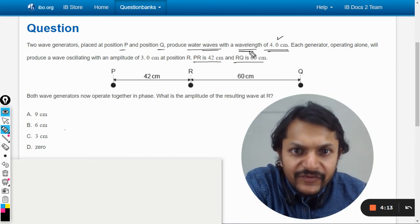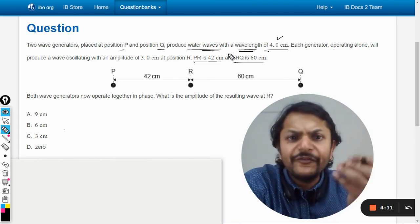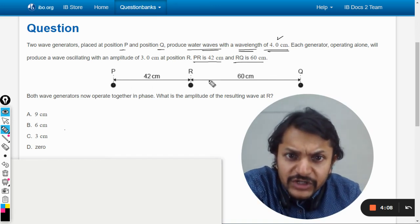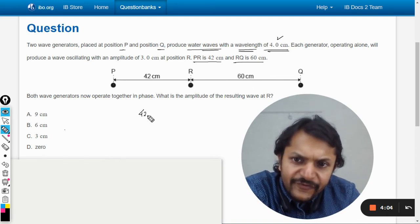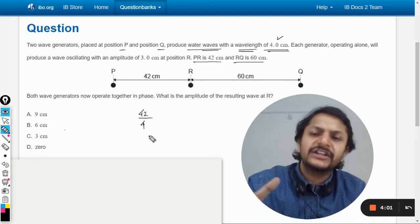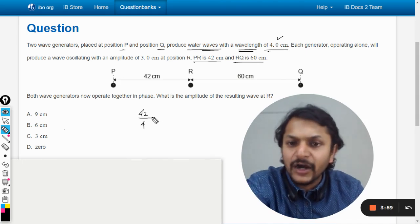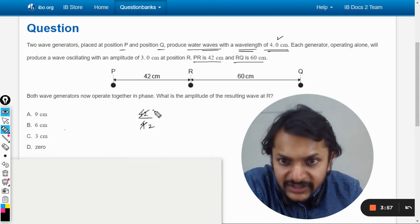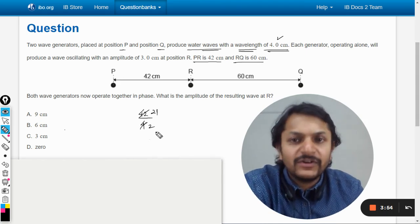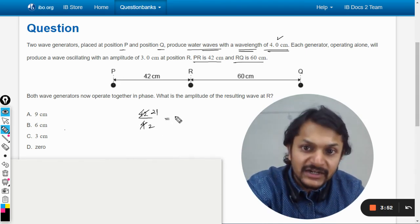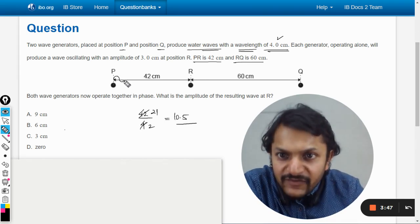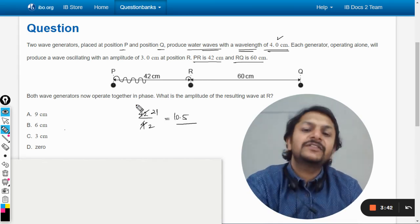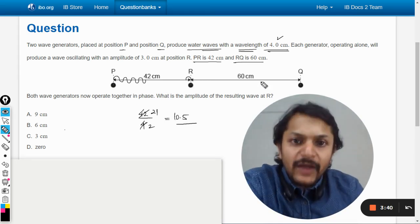4 centimeter is the wavelength. This is 42 and this is 60. We will divide it first. Let us see if 42 gives an integer. It's 10.5, which means that 10 wavelengths will be completed and here the half wavelength will be completed.